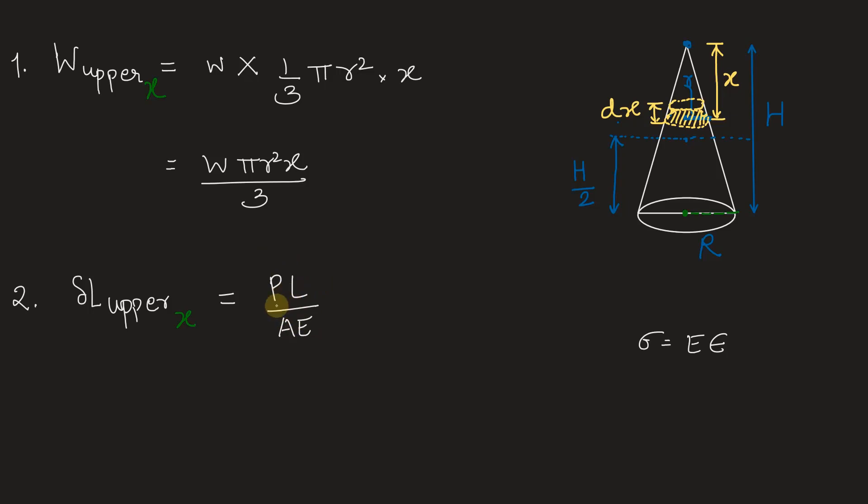Now, in this case, we have the force P as the weight. So let's substitute this weight in place of P: W π r² x / 3, into the length of the segment, dx, which is elongating. It is dx divided by